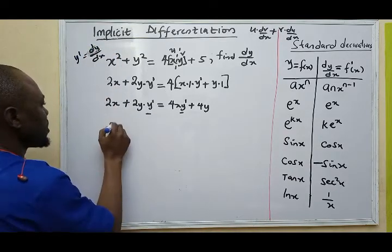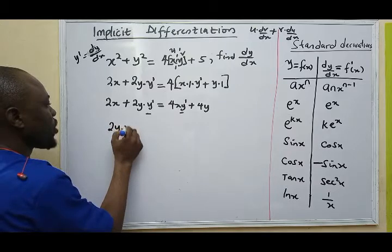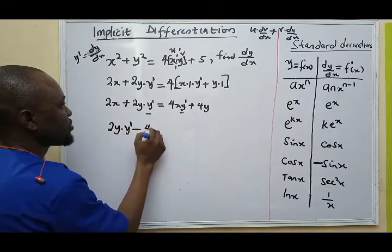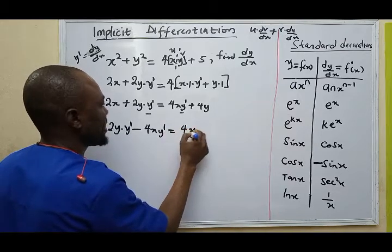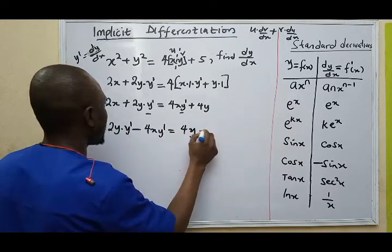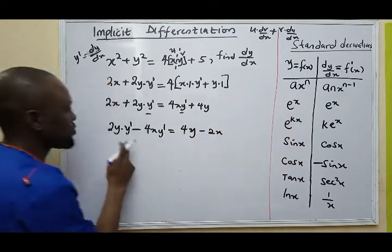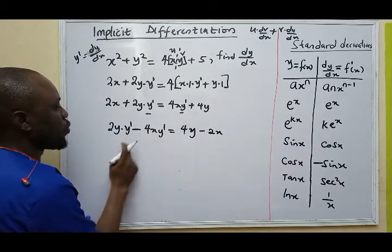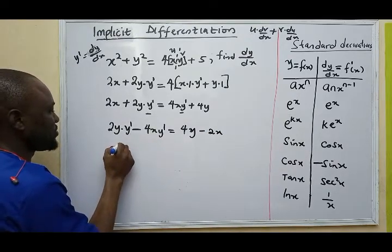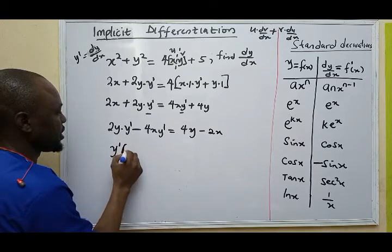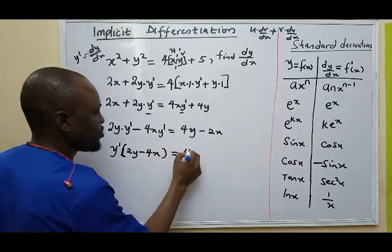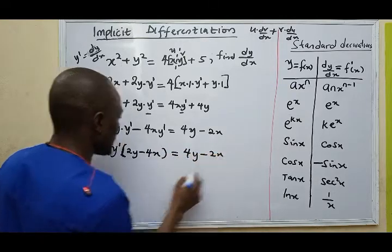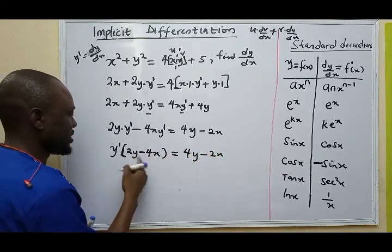I'm going to collect like terms. I have 2y dot y prime minus 4xy prime equals 4y minus 2x. I'm going to factor out y prime, which is my derivative.